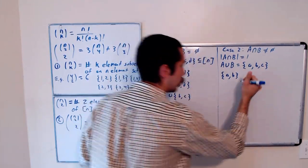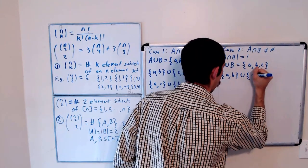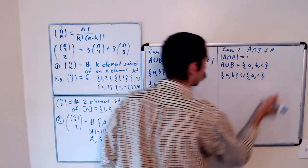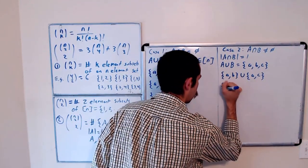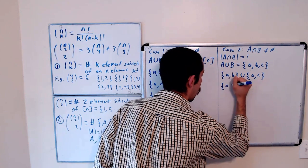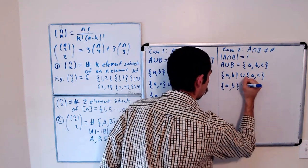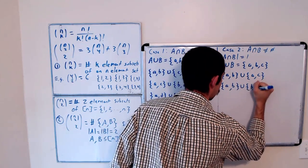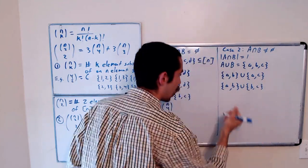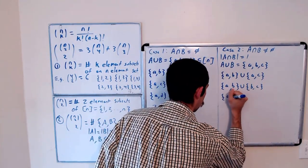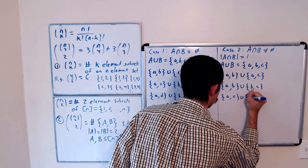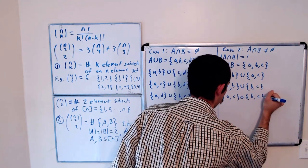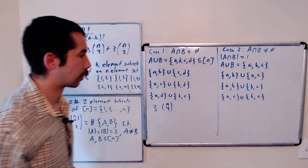So a, b, union, a, c. Let's say a, b, union, b, c. And then the last case would be a, c, union, b, c.